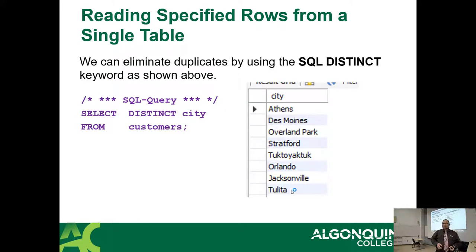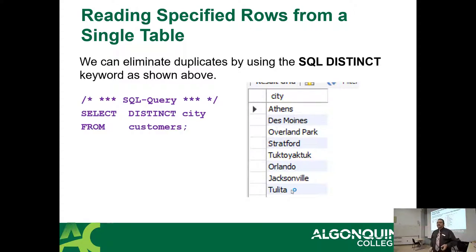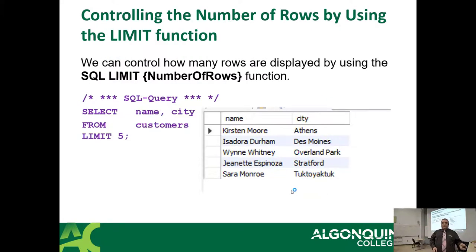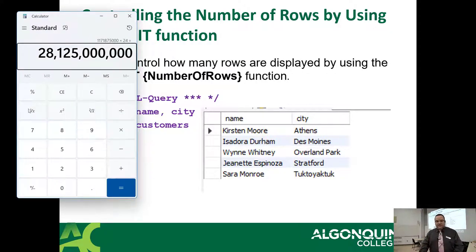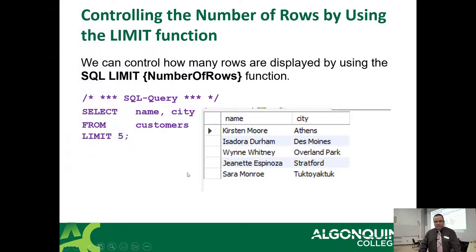There's also a DISTINCT keyword we can include. DISTINCT only pulls the unique values. And there's LIMIT to limit the number of rows returned. I'm going to do a few demos to make this easier to grasp.